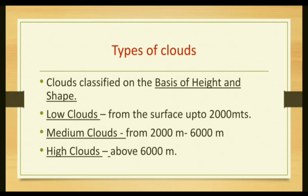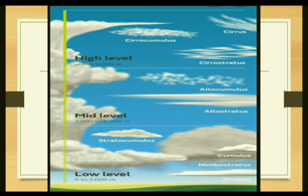Medium clouds, from 2,000 meters to 6,000 meters, include Altocumulus and Altostratus. High clouds, above 6,000 meters, include Cirrus, Cirrostratus, and Cirrocumulus. In total there are 10 types of clouds identified by Luke Howard. You can see this in the picture — from the lowest area to the highest area, most clouds are found in the troposphere. Since convection currents are limited to the troposphere, this part of the atmosphere contains all clouds. Crossing the tropopause into the stratosphere, clouds become very rare.